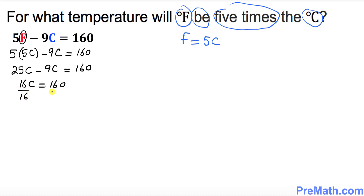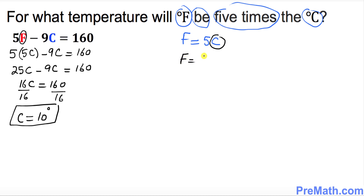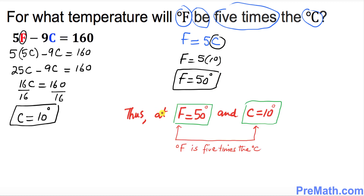Divide both sides by 16, so C turns out to be 10 degrees. Now plugging C back in, wherever you see C just replace it by 10, so F turns out to be 5 times 10, which equals 50 degrees. Thus, at F equal to 50 degrees and C equals 10 degrees, F is 5 times the degrees Celsius. Thanks for watching, and please don't forget to share and subscribe to my channel for more exciting videos.